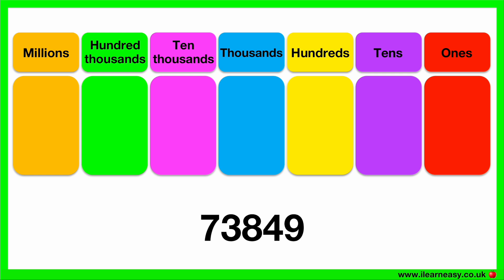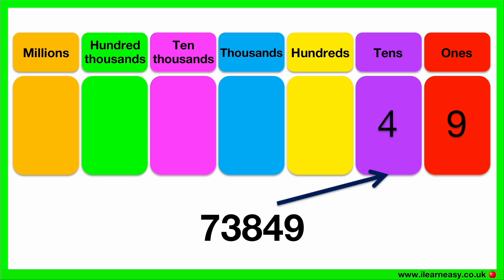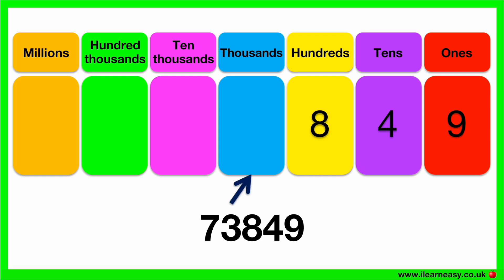Let's try another example. Here we have a five-digit number. Again, we can separate out the different numbers according to their place values. The number 9 goes in the ones group, the number 4 goes in the tens group, the number 8 goes in the hundreds group, the number 3 goes in the thousands group, and the number 7 goes in the ten thousands group. So this number is 73,849.